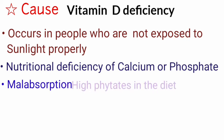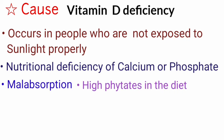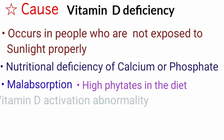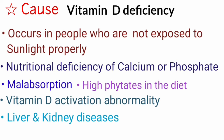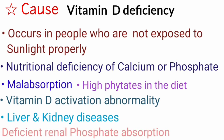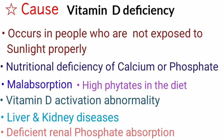High phytate content in the diet may reduce the absorption of vitamin D. Abnormality of vitamin D activation can occur due to liver and renal diseases. Additionally, deficient renal absorption of phosphates is another cause.